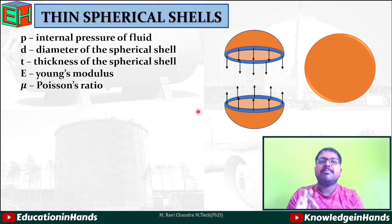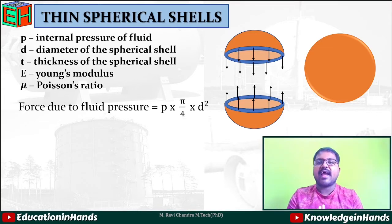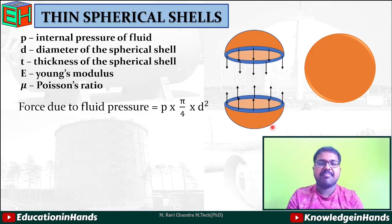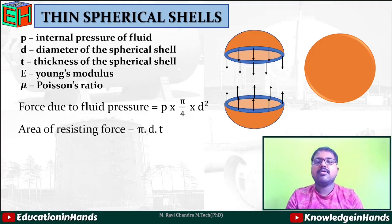If we consider the force by the fluid, it is taken as internal pressure of the fluid multiplied by the cross-sectional area, where cross-sectional area is (π/4)d². The resisting force acts on the circumference of the spherical shell, and the area of the resisting force is π·d (the perimeter) multiplied by the thickness t.